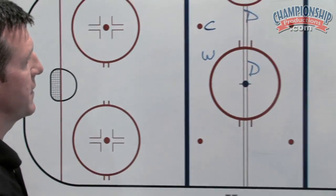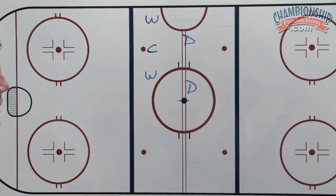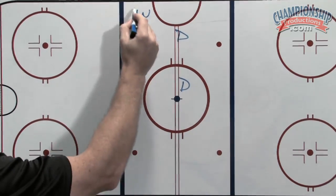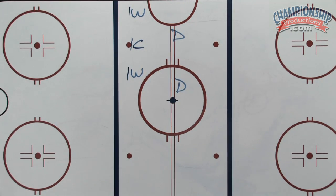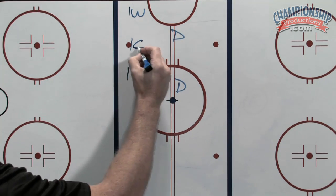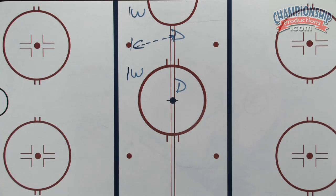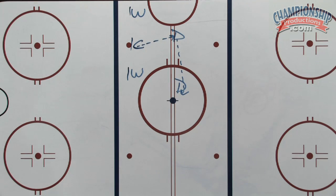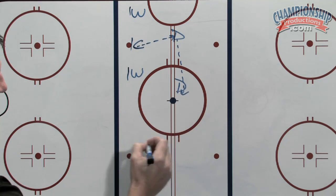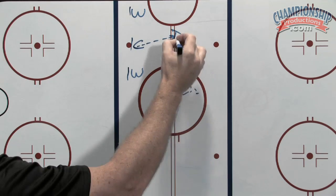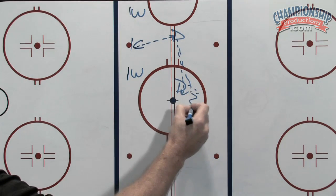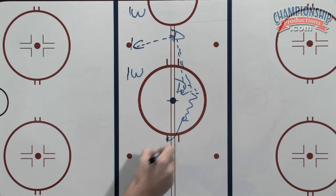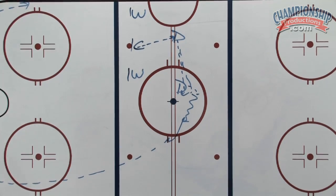In our first face-off tactic on the offensive side of the red line, we have a traditional look with our wings up and our center taking the face-off. We want our center to win the puck back to the strong-side defenseman. We're looking to go D to D as quickly as we can. The middle defenseman may have to back off slightly to create that angle, and when we go D to D, this defenseman starts to take ice. We gain the red line and it's a hard rim all the way around into the offensive zone.